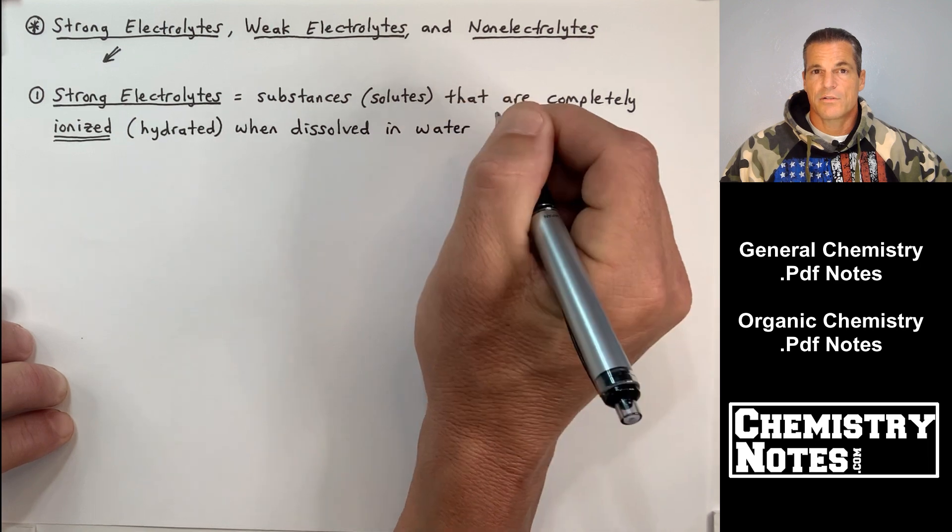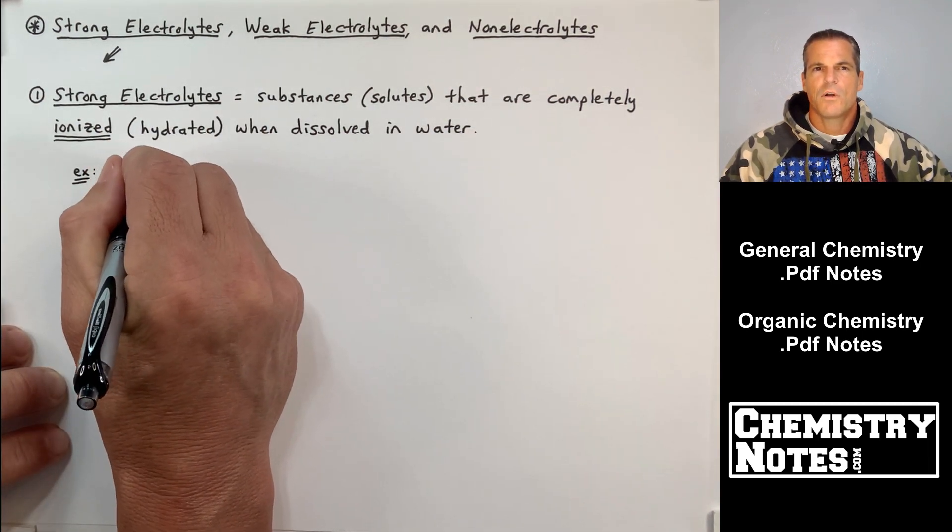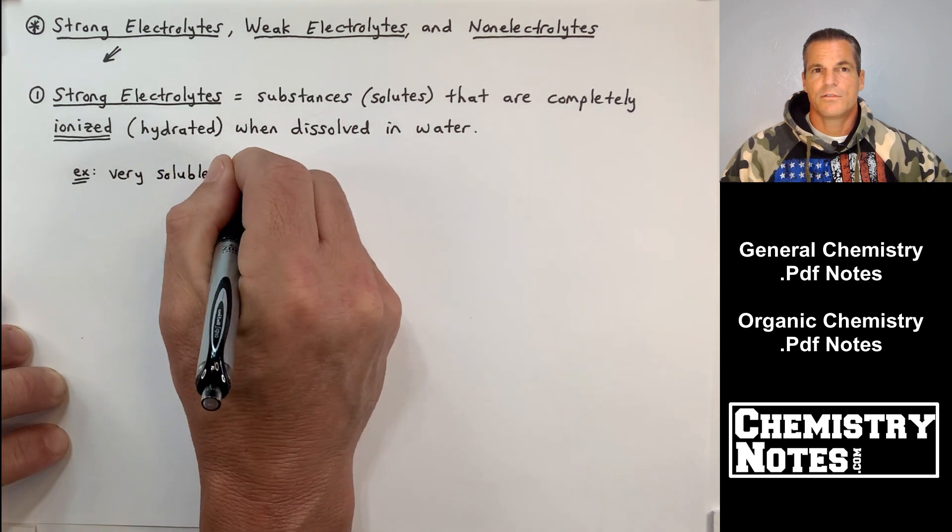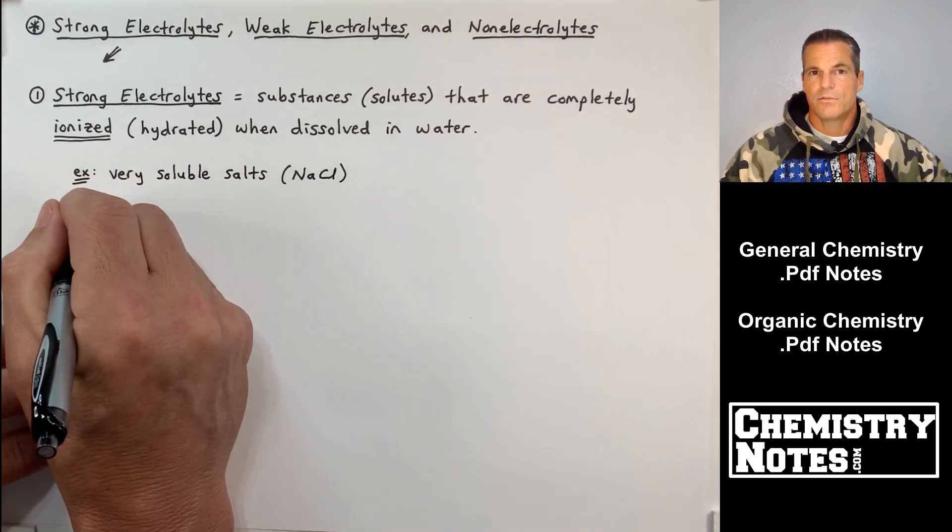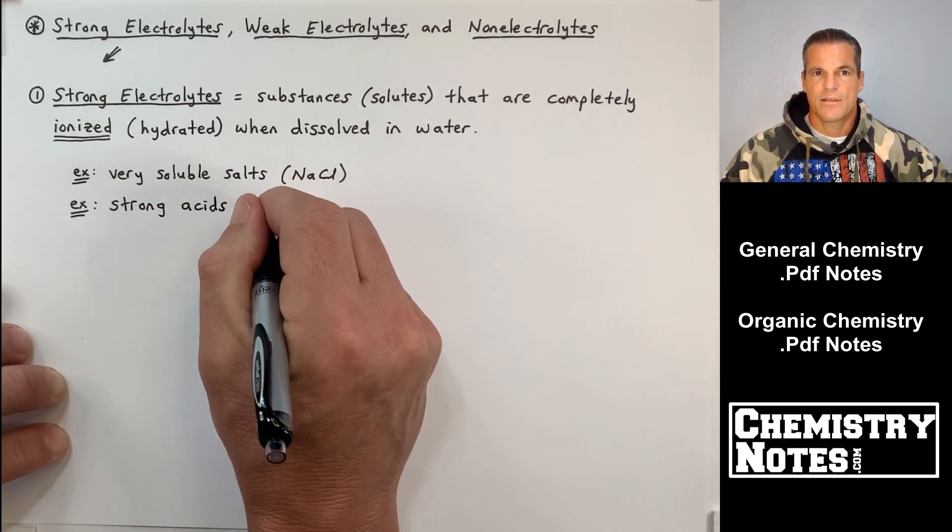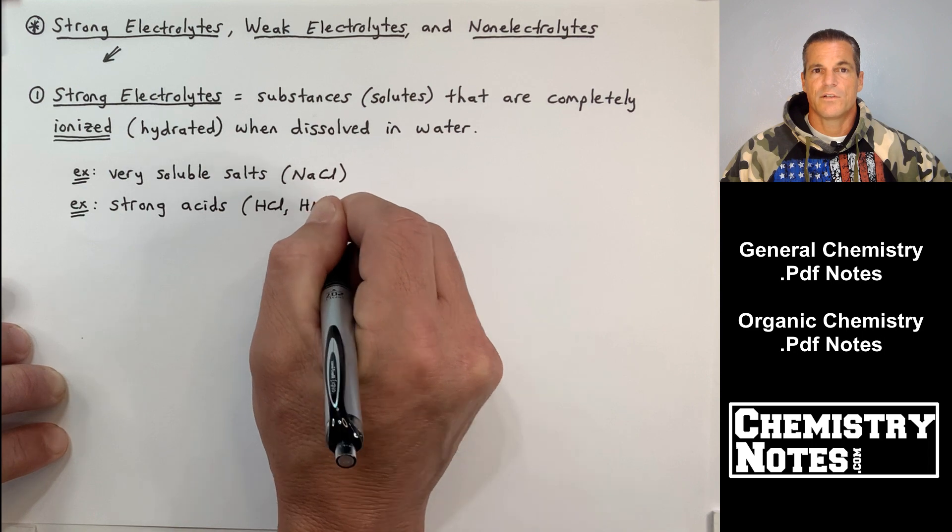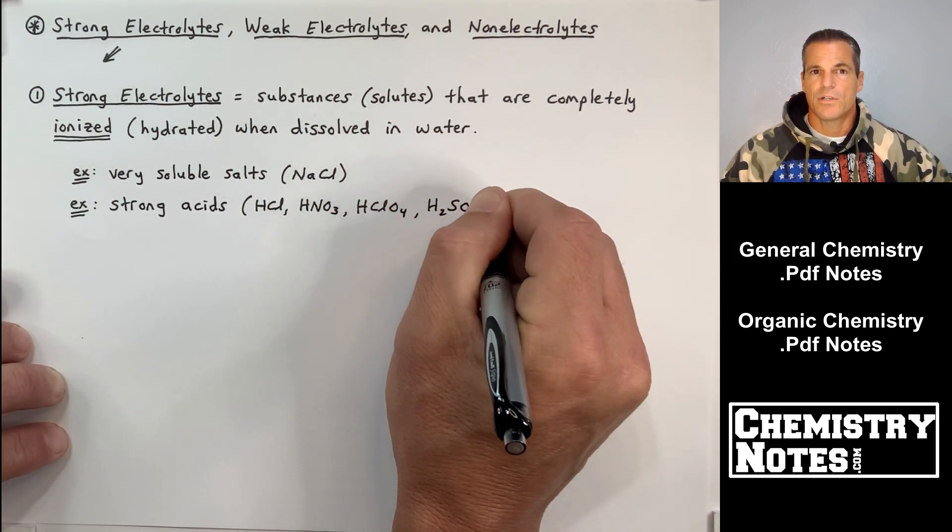So let's take a look at strong electrolytes in detail here. Strong electrolytes are substances or solutes that are completely 100% ionized or hydrated when they're dissolved in water. Some examples, very soluble salts.